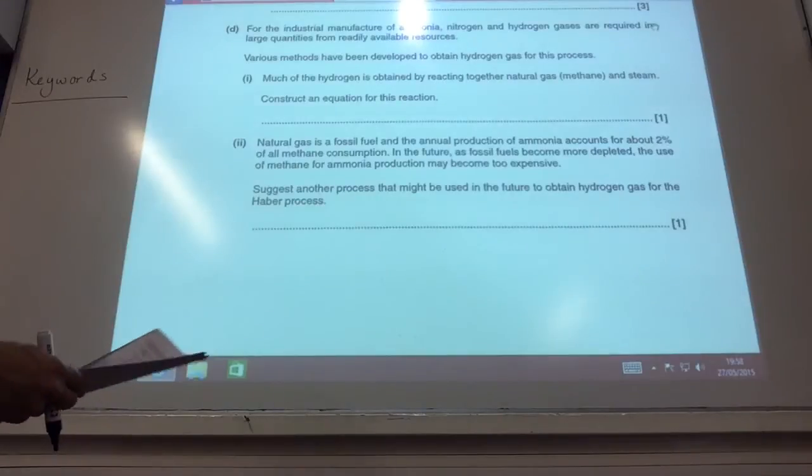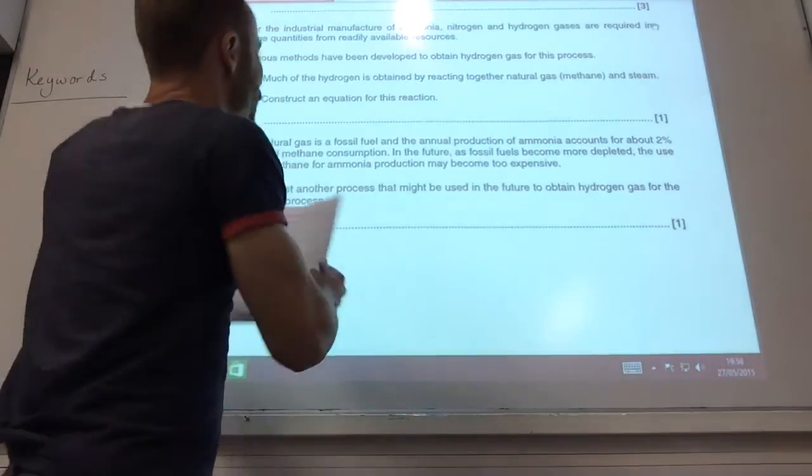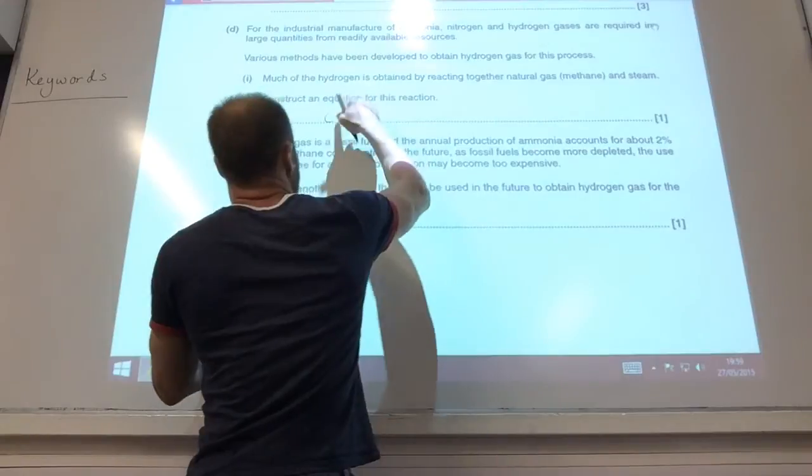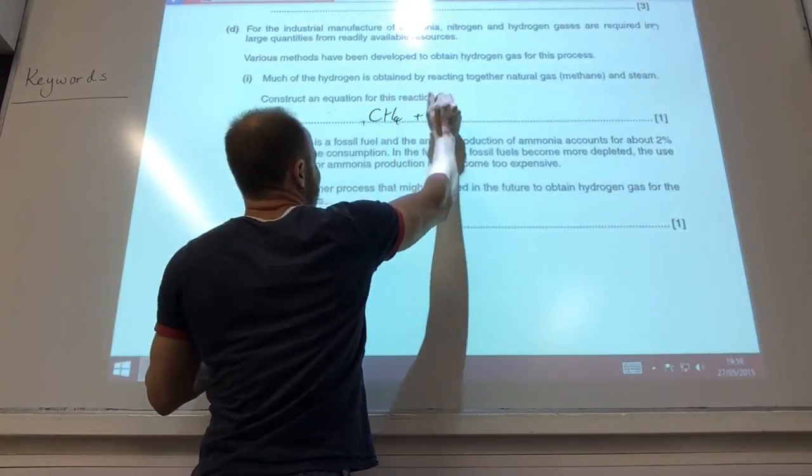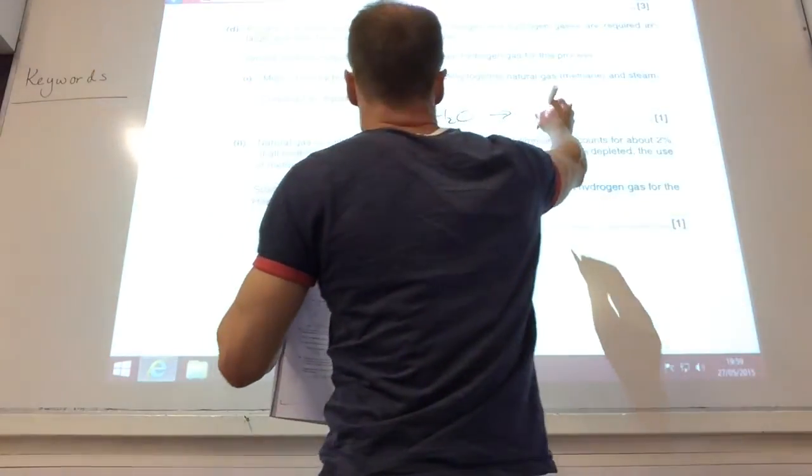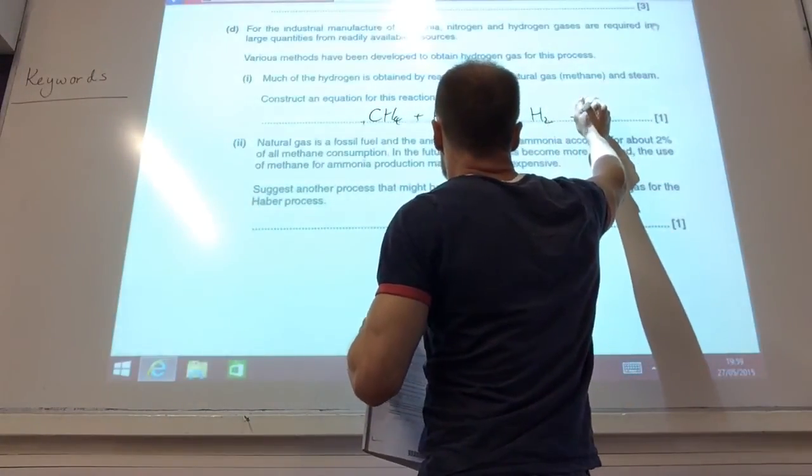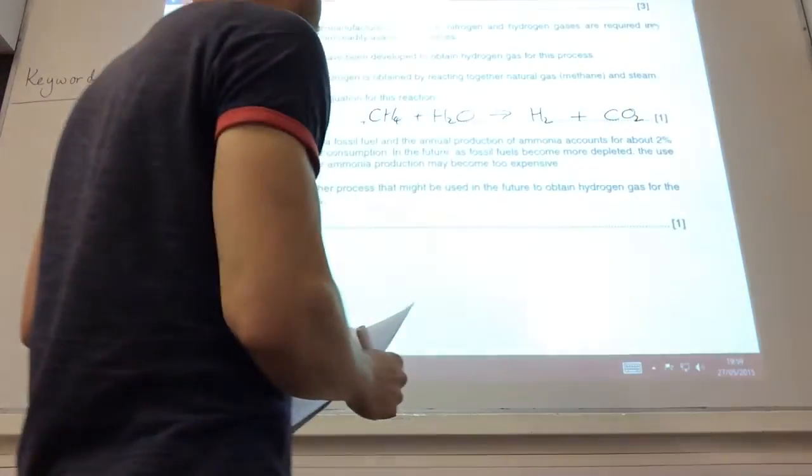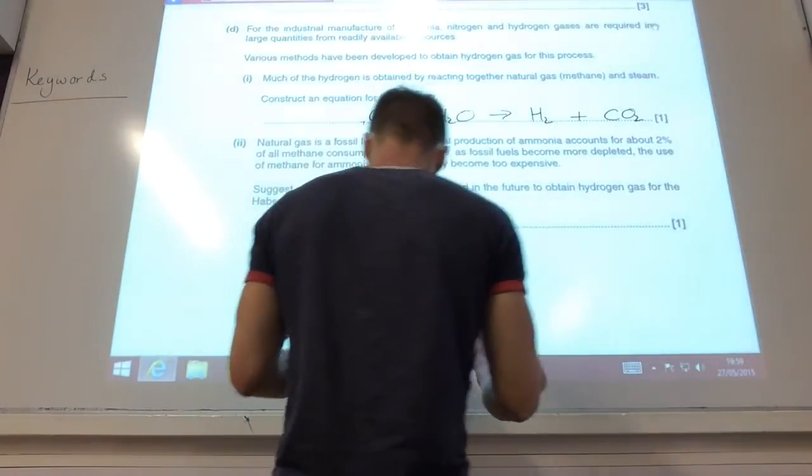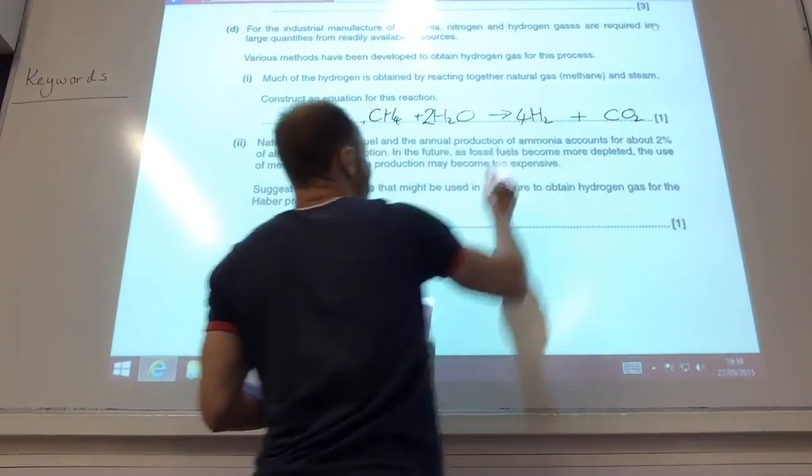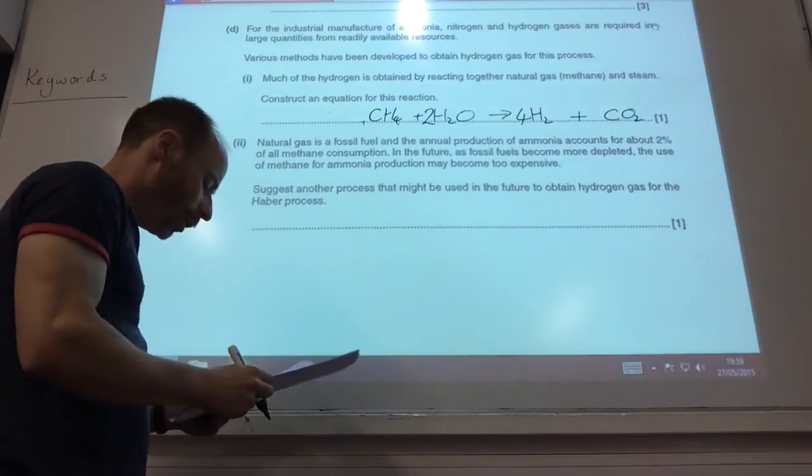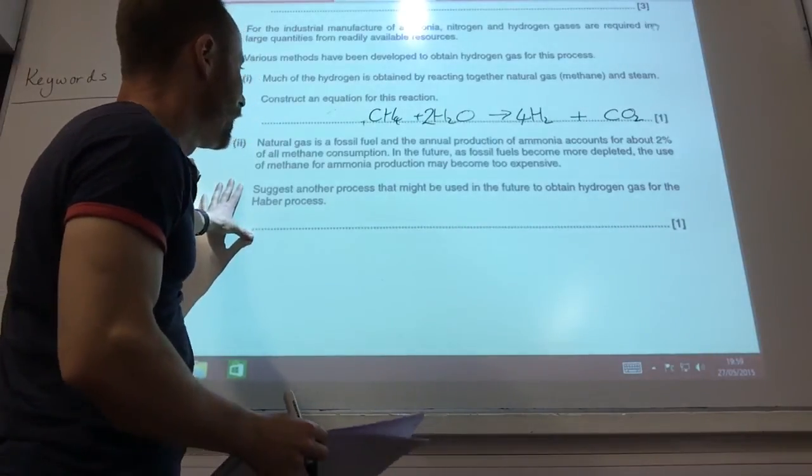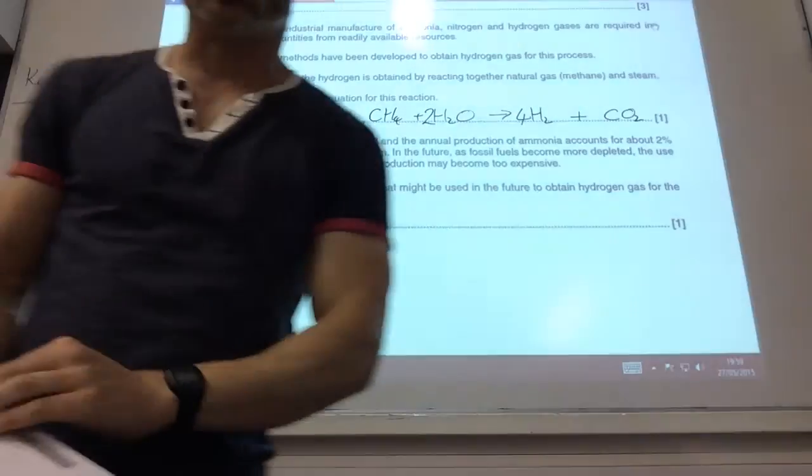Alright, so construct an equation for methane reacting with steam to produce hydrogen and carbon. Let's go for carbon dioxide. You could also get carbon monoxide as well. To balance that, you need two waters. Well, two steams actually. And four hydrogens. Suggest another process that we could obtain hydrogen gas for, for the Haber process. Electrolysis of water could be one.